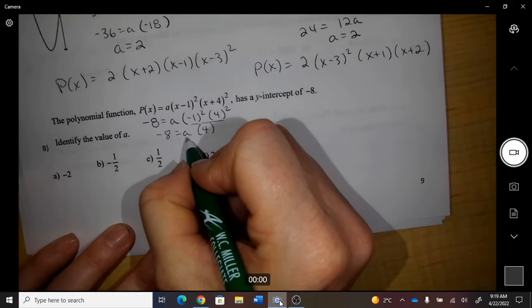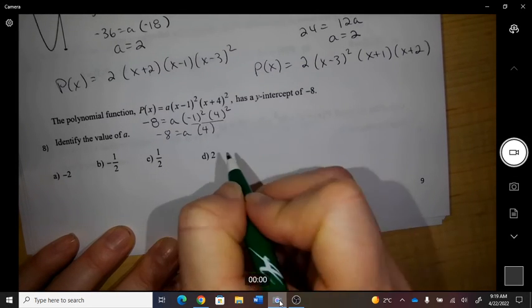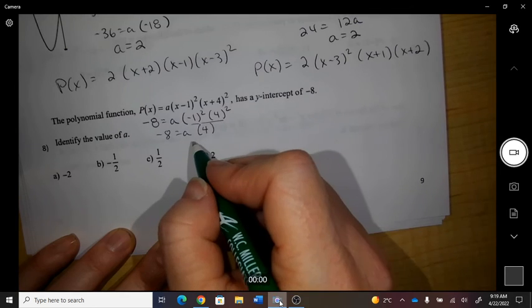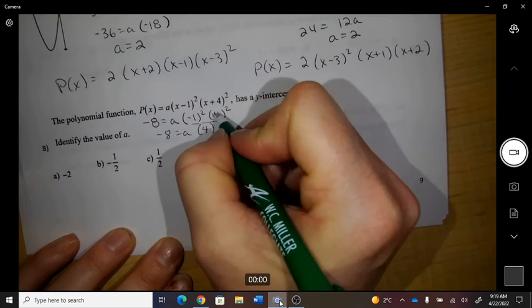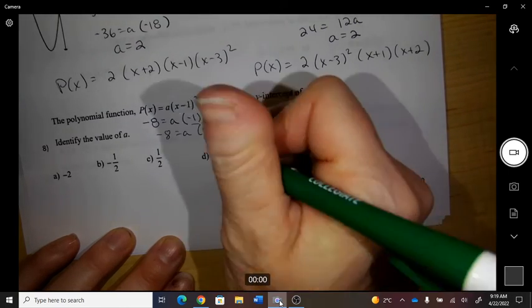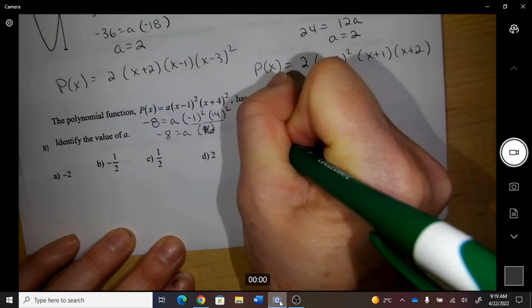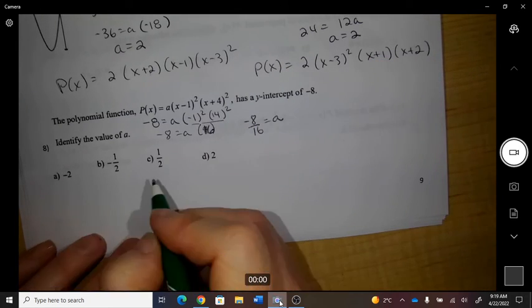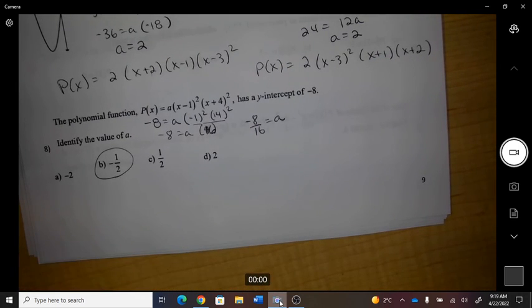So therefore, if I... oops, sorry, this is 16. There we go, made a mistake. 4 squared is 16. So negative 8 divided by 16 equals a, which is negative 1 half.